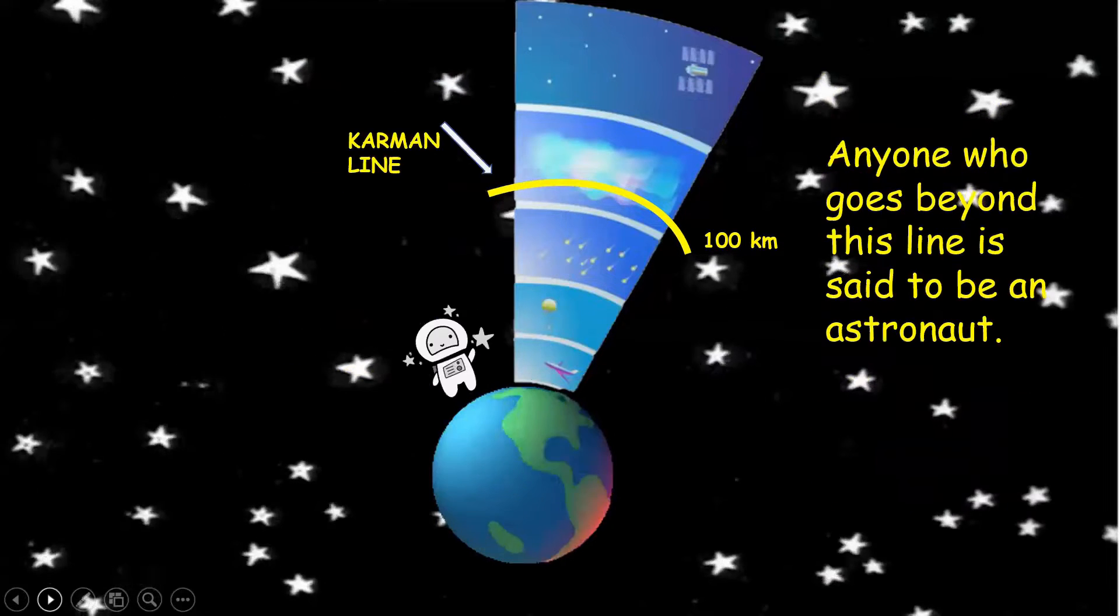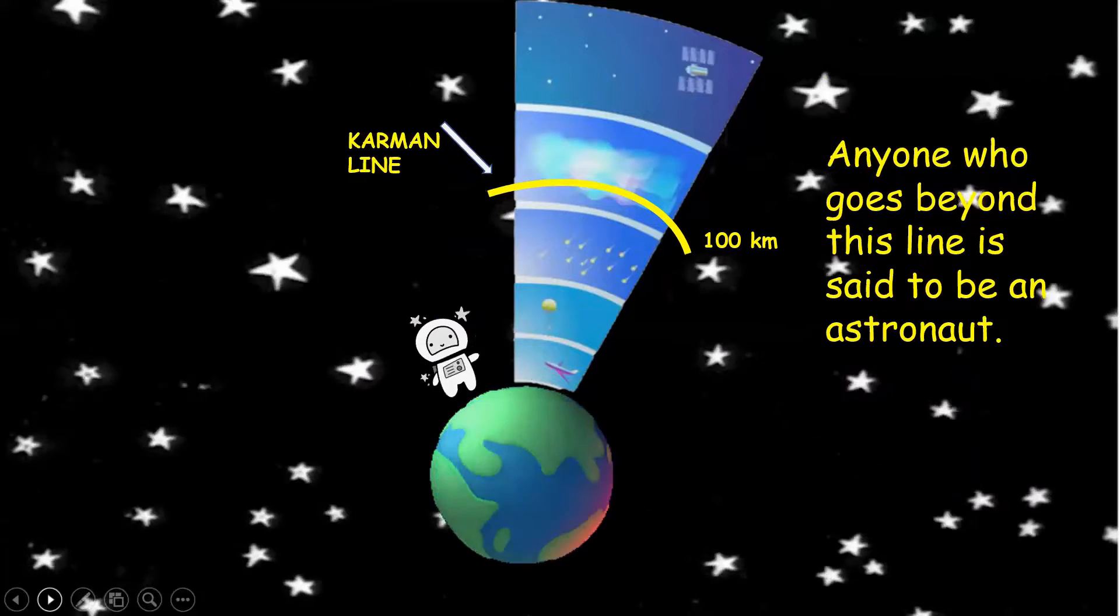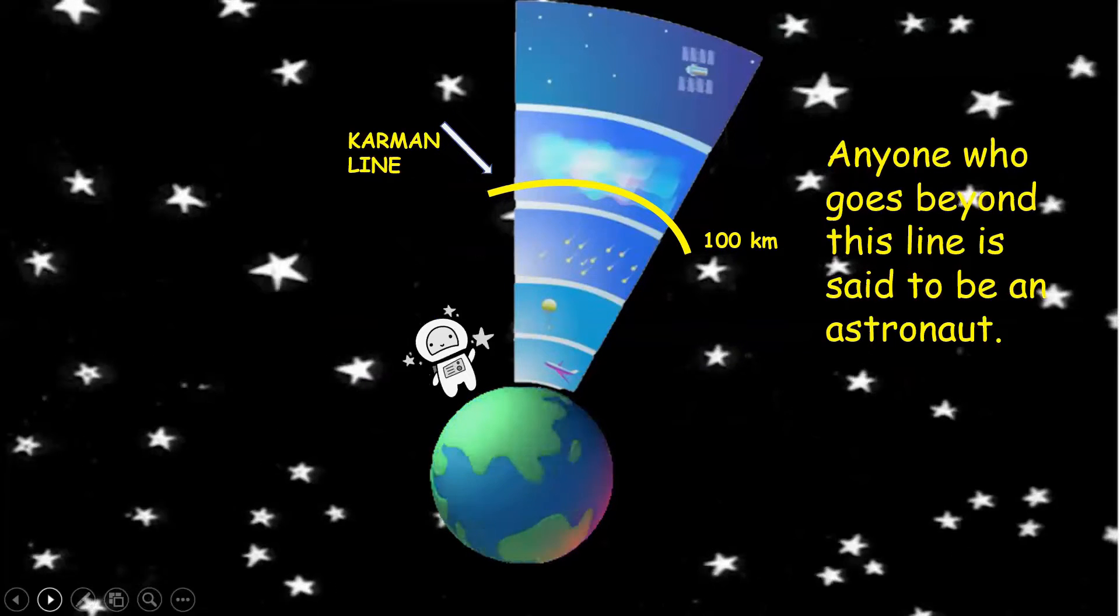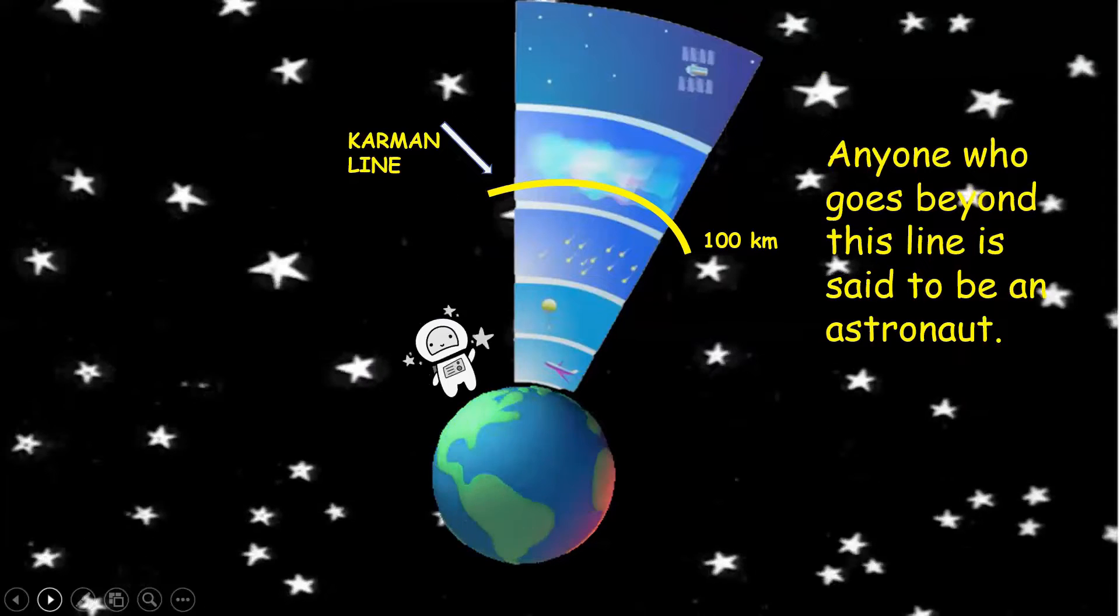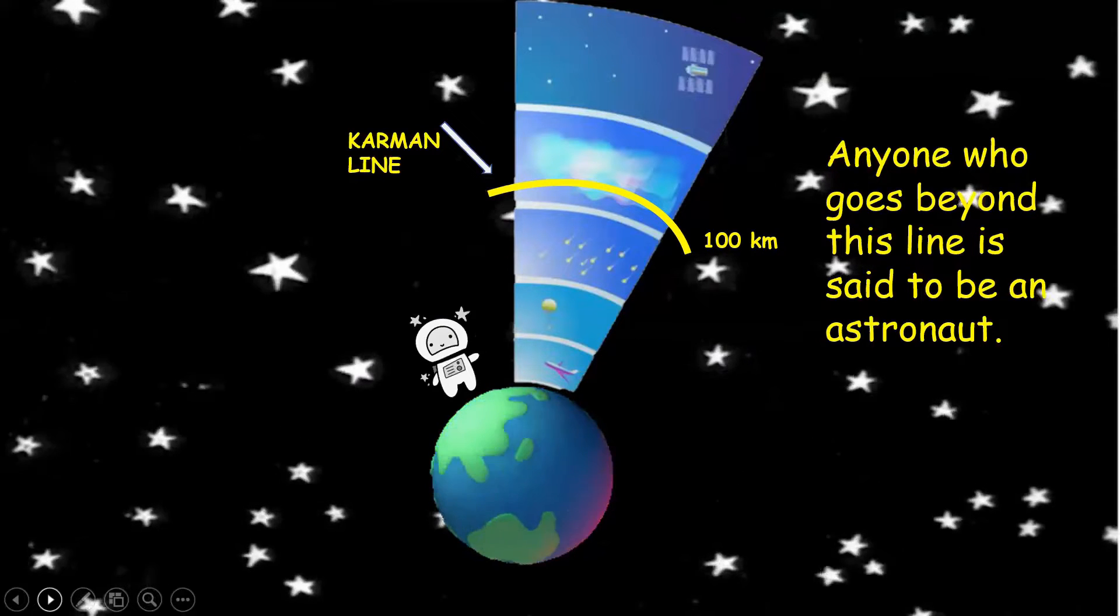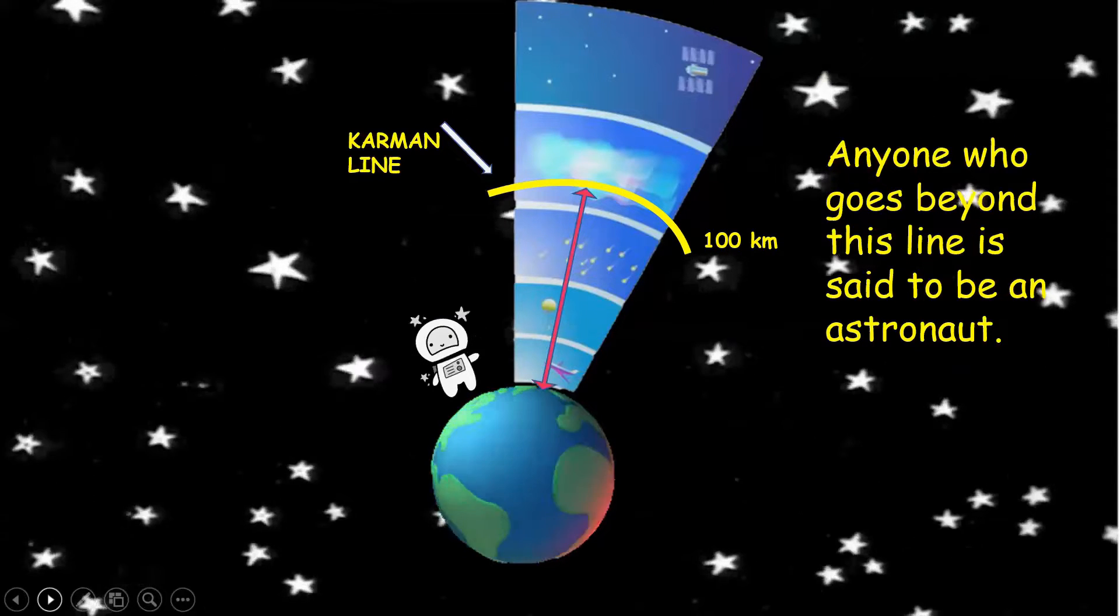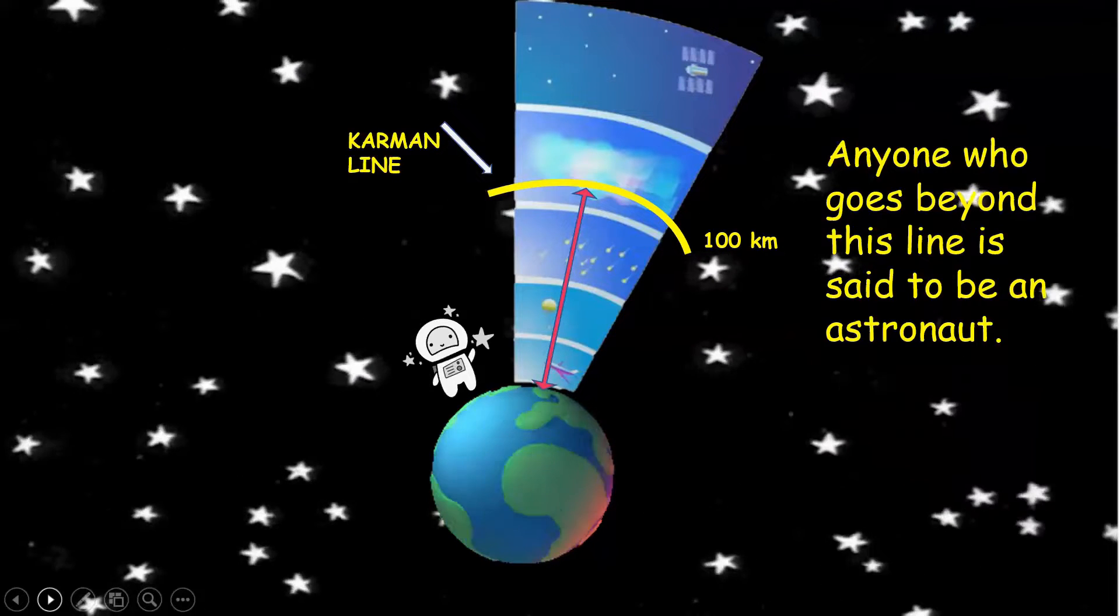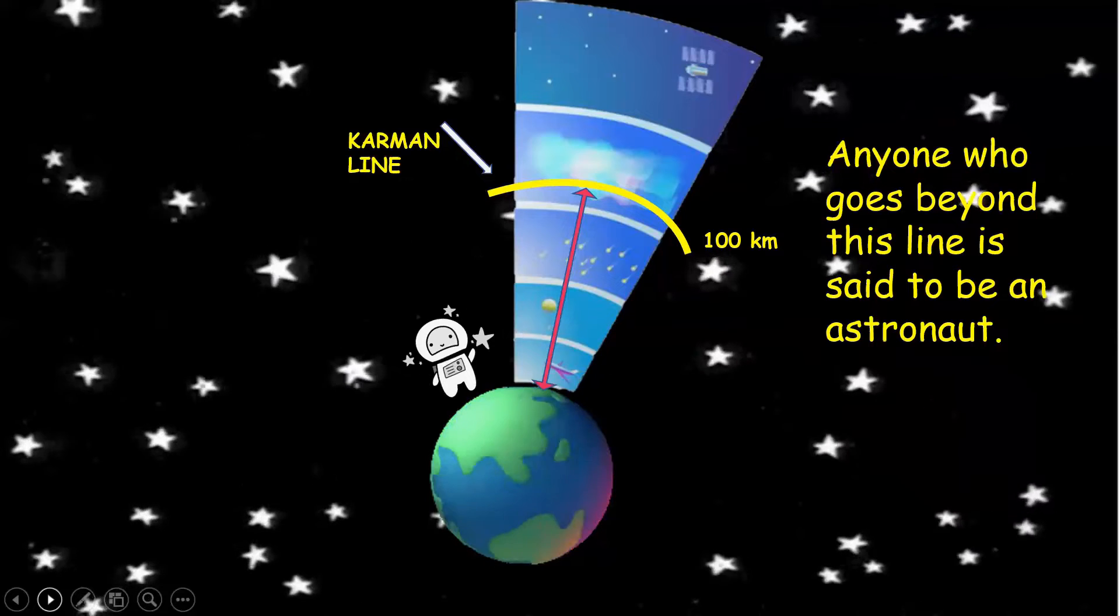And now comes the most interesting part. Anyone who goes beyond this line is said to be an astronaut. That is the Karman line which extends from the sea level up to 100 kilometers in the space.